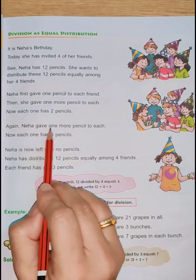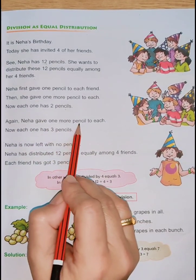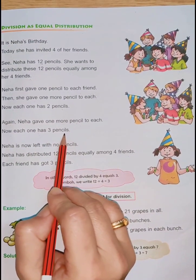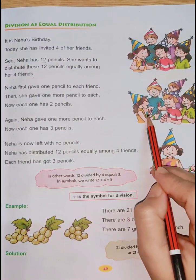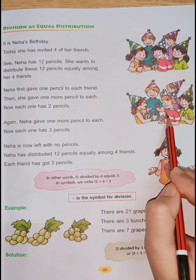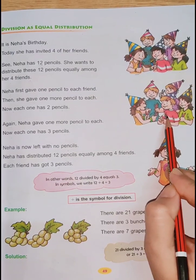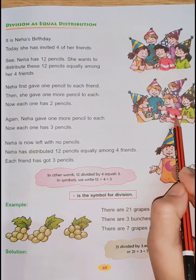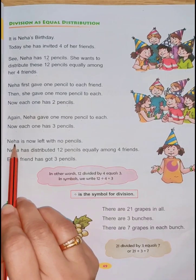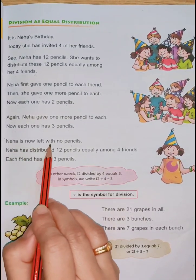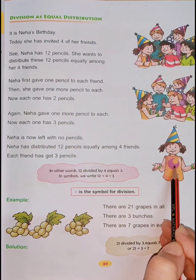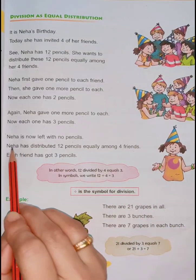Again, Neha gave one more pencil to each. Now each one has three pencils. She distributed one to each of her four friends, and now all four children have three pencils each. Neha is now left with no pencils. Can you see in the picture — she has no pencils at all.